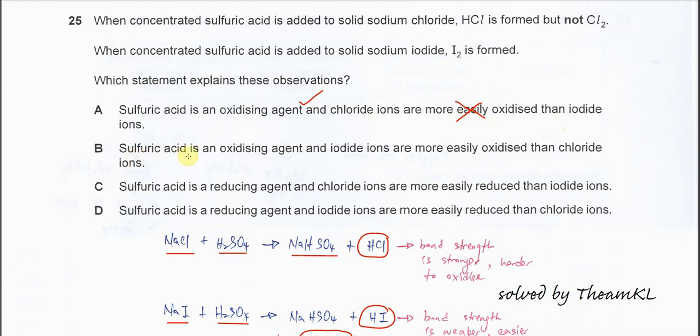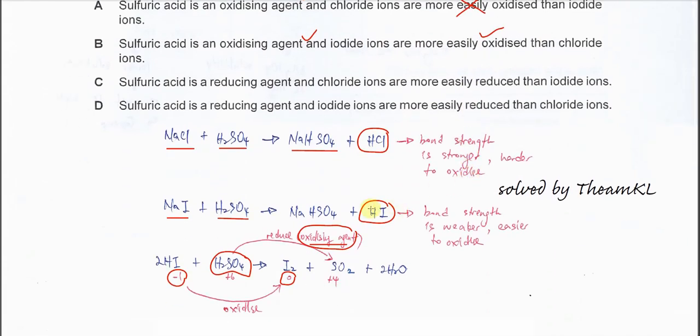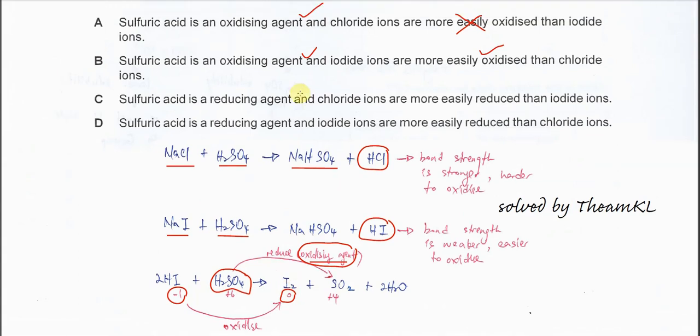For B, sulfuric acid is an oxidizing agent? Yes. And iodide ions are more easily oxidized than chloride. This is correct. Because the HI bond is easy to break, and therefore iodide is easy to be oxidized and form iodine. So this one is correct.